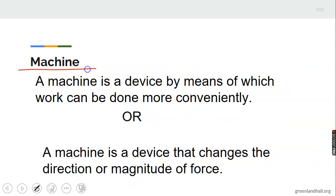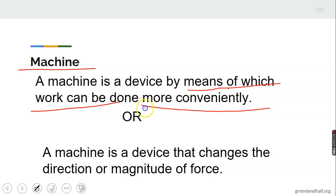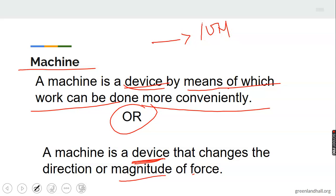What is a machine? A machine is a device by which work can be done more conveniently — it makes our work easier. A machine is a device that changes the direction or magnitude of force. For example, you can input a small force, say 10 N, and bring out 20 N. This is what we call a machine.